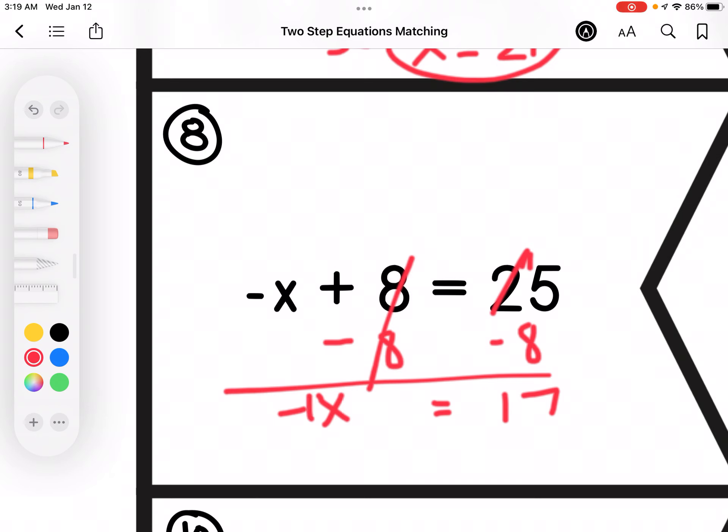So we're going to subtract 7 by negative 1 on each side. So x, because a negative 1 divided by negative 1 is positive. So 17 divided by negative 1 is negative 17.